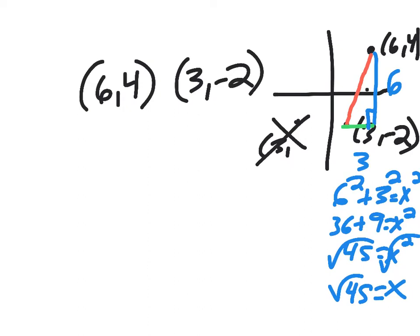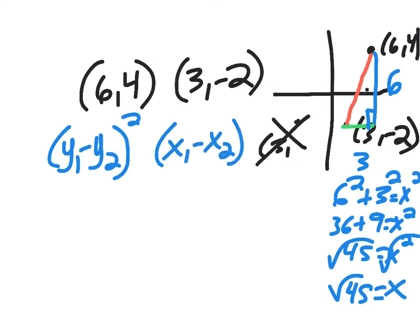So we do have something called the distance formula. The distance formula says you're going to subtract your y coordinates, you're going to subtract your x coordinates, you'll square those, you'll add them together, and then finally you'll square root. So it's a play on the Pythagorean theorem.